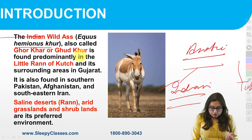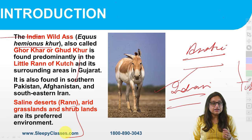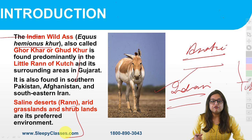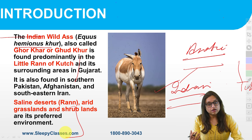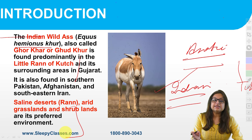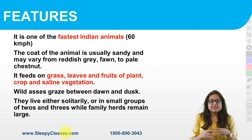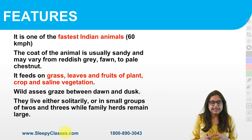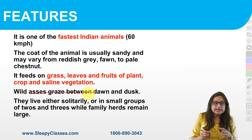The Indian Wild Ass is found in the Little Rann of Kutch and other areas in Gujarat. Talking about its habitat: saline deserts, arid grasslands, and shrublands are its preferred environment. Indian Wild Ass is one of the fastest Indian animals — reaching speeds of 60 to 80 km per hour. It feeds on grass, leaves, fruits of plants, and saline vegetation.